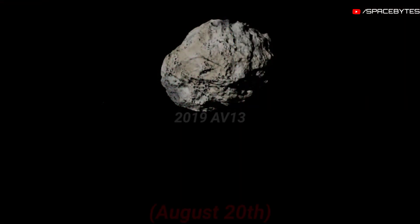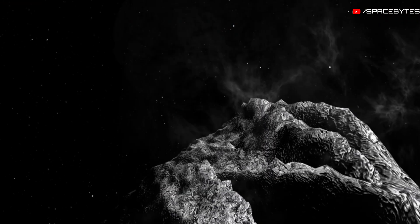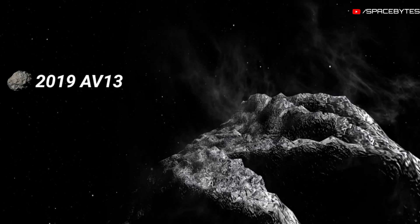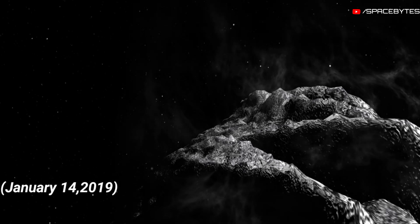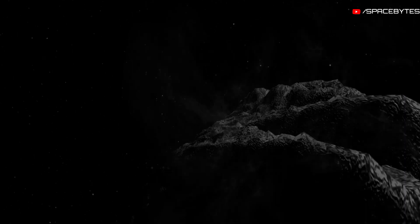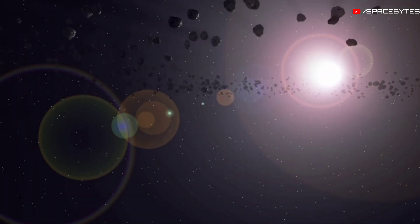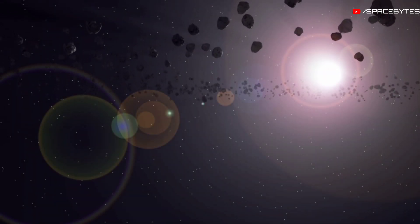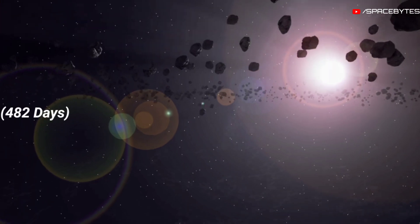Second asteroid on August 20th: the asteroid 2019 AV-13 was detected on January 14th, 2019. This near-Earth object belongs to the Apollo group. It makes one orbit around the Sun in 482 days.